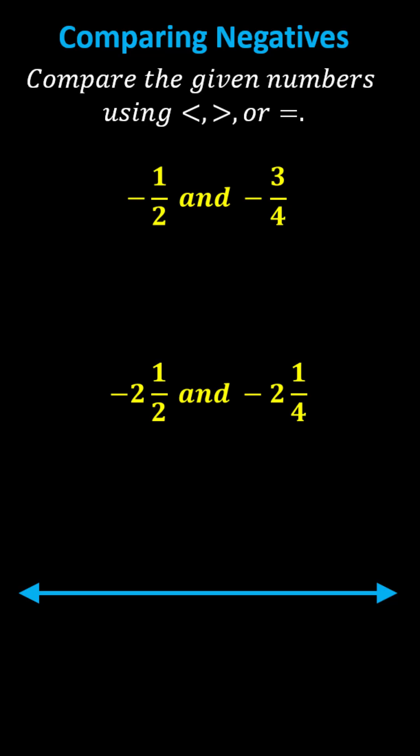We're comparing the given numbers using less than, greater than, or equals. First we have negative one-half and negative three-fourths. Let's plot these values on the number line to do the comparison.